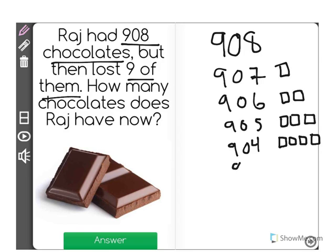So as we continue subtracting, his 5th chocolate will be 903. 6 will be 902.